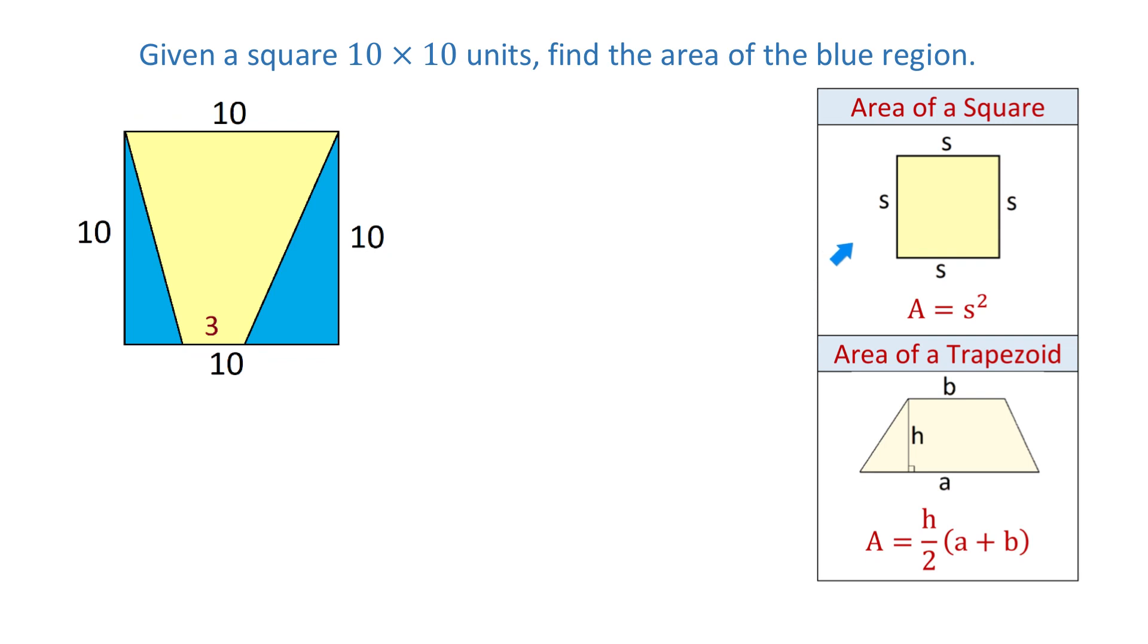The area of a square with side S is given by the formula A equals S squared. The area of a trapezoid with bases A and B and height H is given by the formula A equals H over 2 times A plus B.